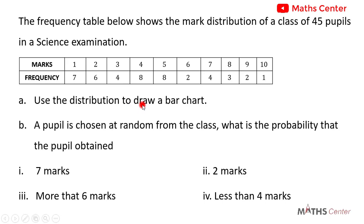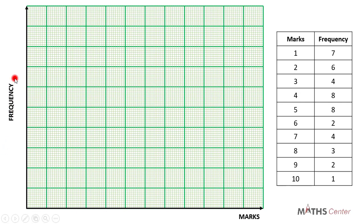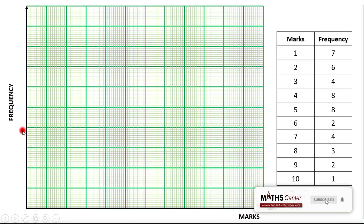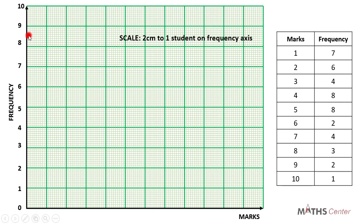We have the marks and their corresponding frequencies. We are going to draw our bar chart on the graph sheet. We have the marks on the horizontal axis and the frequency on the vertical axis. We need to choose a scale. Looking at the values for the frequencies, I'm going to choose a scale of two centimeters to one student on the frequency axis.